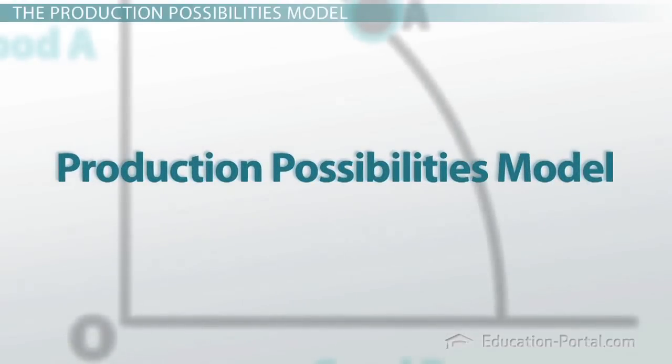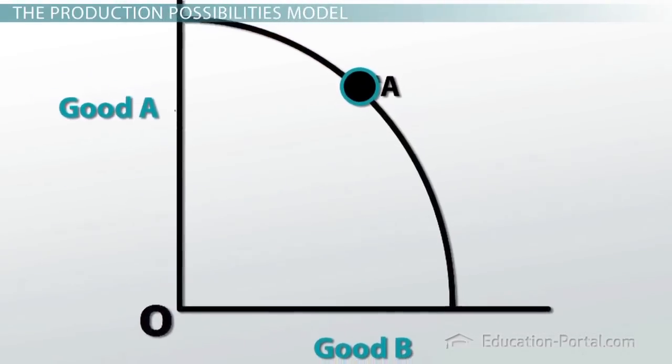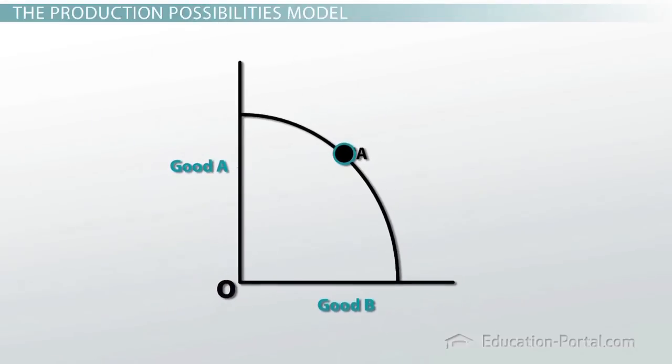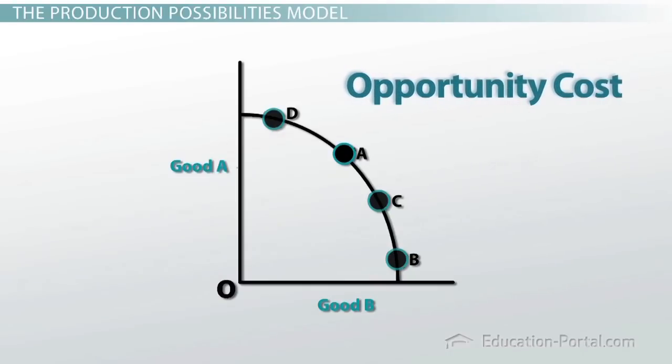The production possibilities model is a visual model of scarcity and efficiency. It simplifies the concept of how an economy can produce things, using only two goods as an example. It's going to show us all the production possibilities we have between these two goods. It takes the concept of opportunity cost, which we already explored, and helps us make the best economic decision we can make, which is to say, the most efficient decision.